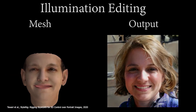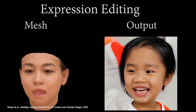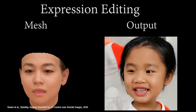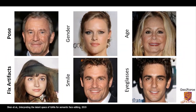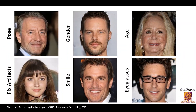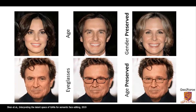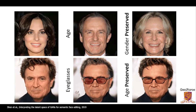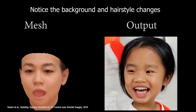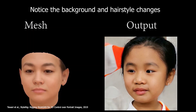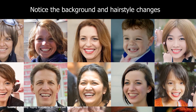Recent works like StyleRig and InterfaceGAN attempt to identify control parameters of a high-quality pre-trained 2D face generator. However, their performance is inherently limited by the quality of the pre-trained generator and how well it disentangles properties that we ultimately want to control. A traditional graphics pipeline provides control over face geometry, pose, lighting, etc., and these may be entangled in the latent representation.